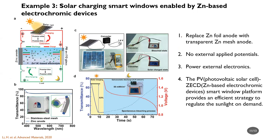The last example is solar charging smart windows enabled by zinc anode-based electrochromic devices. As shown in figure A, a solar cell can power the zinc-based electrochromic device during the daytime, and the device can power external electronics at night. Figure C shows a prototype of the solar charging smart window, and figure D demonstrates the optical contrast at daytime and at night. For the whole smart window system, no external power is required, and the system can also power external electronics. Additionally, in figure B, we introduced a transparent zinc mesh with high optical transmittance of around 90%.